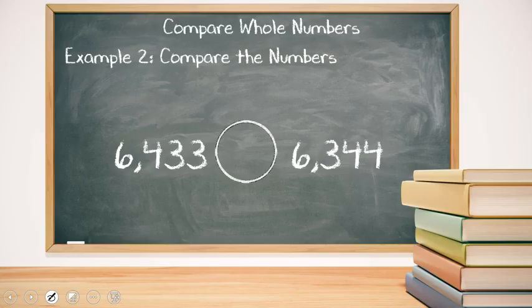For example number two, we want to compare 6,344 and 6,433. Let's think about the number line. Both numbers are in the six thousands.